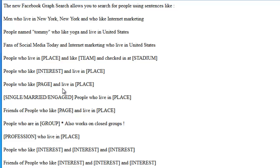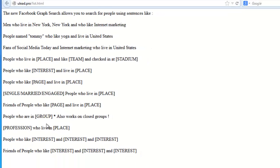People who like a certain page — so if there's a page in your category, you can search for that, and maybe filter by state or marital status, whether they're single, married, or engaged. You could fill in a profession, like a doctor or lawyer who lives in a certain place. You could also look for friends of people who like a page, which finds those people and their friends as well.